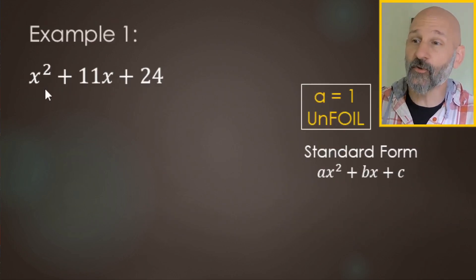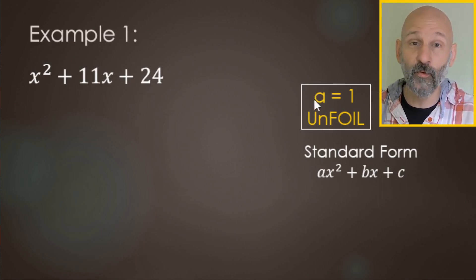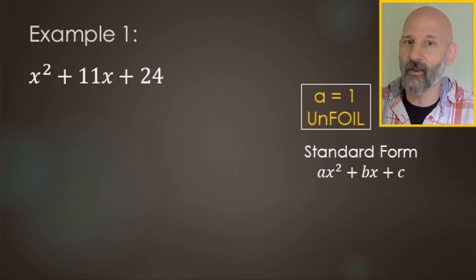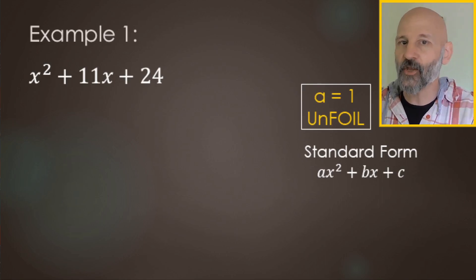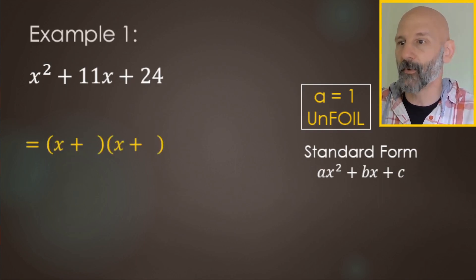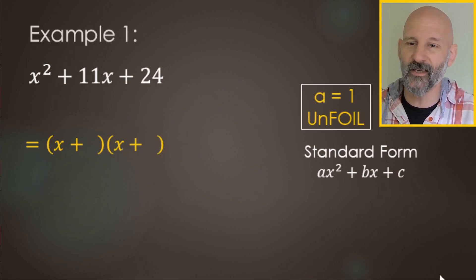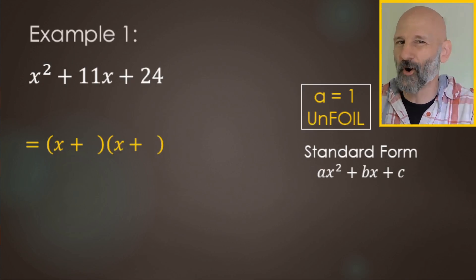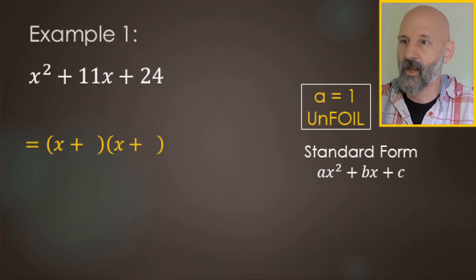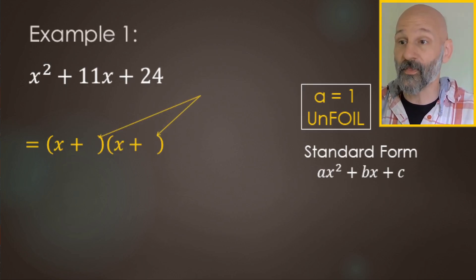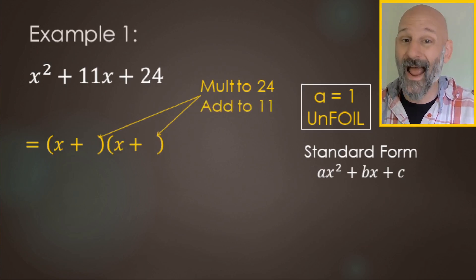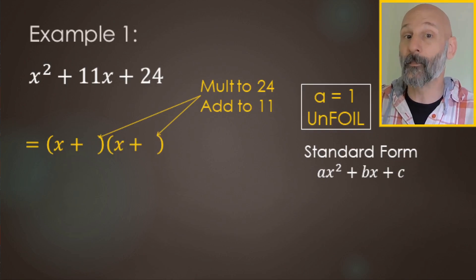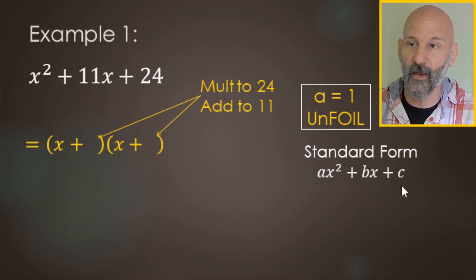So here we're going to factor x squared plus 11x plus 24. This is an a equals one style — there's just a 1x squared so you just write x squared. Our answer looks like x plus a number in parentheses and x plus another number in parentheses. The two numbers need to multiply to 24 (the c term or constant term) and add to 11 (the b term or middle term). Normally you start by listing numbers that multiply to 24: 1 and 24, 2 and 12, 3 and 8, 4 and 6. Five doesn't go into 24 so we stop there — that's the complete list of pairs.